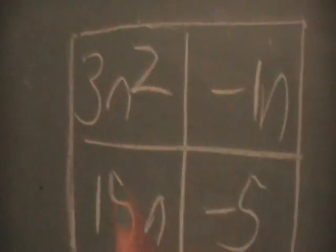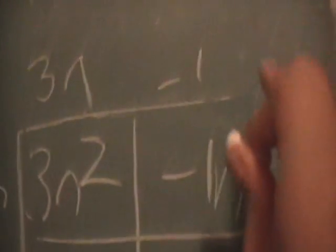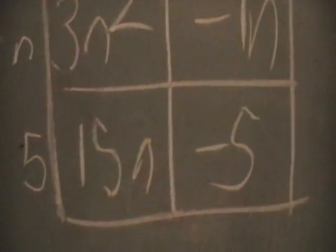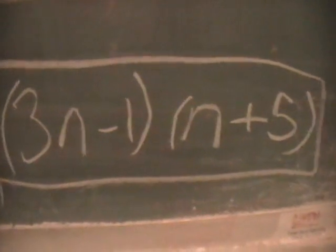Now all you gotta do, is figure out which four numbers multiply together to make these four numbers. I'll show you what I mean. You see, negative 1 and n make negative 1n. And n and 3n make 3n squared. Now, 3n and 5 make 15n. And 5 and negative 1 make negative 5. Now you just write out what you see. Like this.